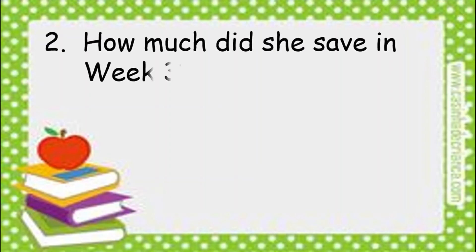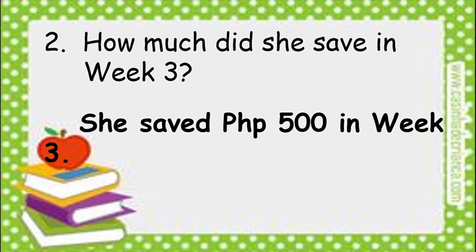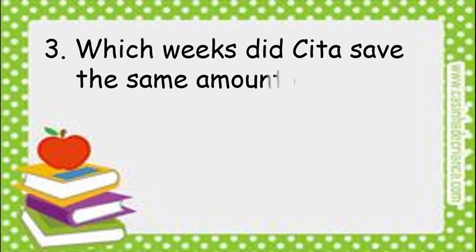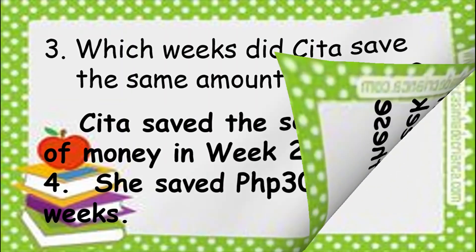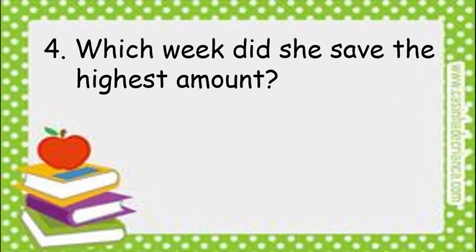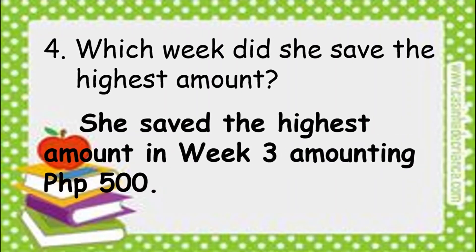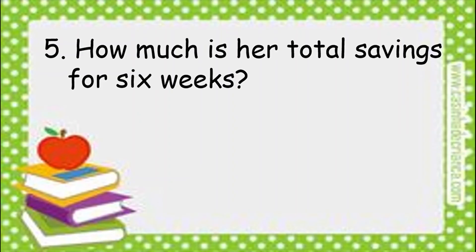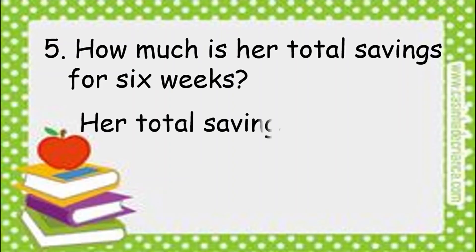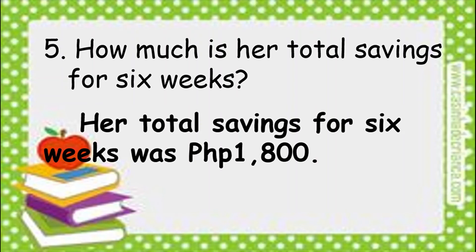Number 2: How much did she save in week 3? She saved 500 pesos in week 3. Number 3: Which weeks did Sita save the same amount of money? Sita saved the same amount in week 2 and week 4 — 300 pesos each. Number 4: Which week did she save the highest amount? She saved the highest amount in week 3, 500 pesos. Number 5: How much is her total savings for 6 weeks? Her total savings for 6 weeks was 1,800 pesos.